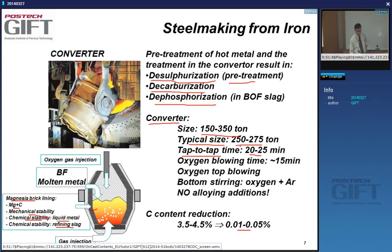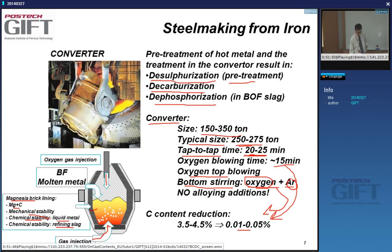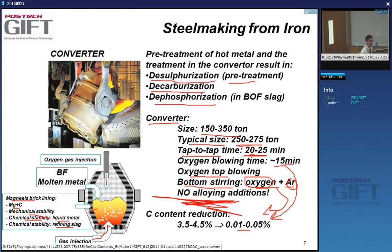Of those 20–25 minutes, about 15 minutes are spent blowing — carrying out the decarburization. You have oxygen top-blowing and bottom stirring by injecting oxygen and argon through the bottom. The argon stirs the bath for uniformity. Importantly, the BOF is not an alloying step — no alloying additions are made. If anything, you remove a lot of elements, not only carbon.